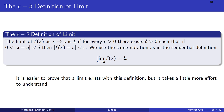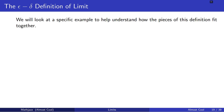The epsilon-delta definition is easier to use to prove that a limit exists or what the value of a limit is, but it takes more effort to understand because it introduces these extra variables epsilon and delta and uses them in a very particular way. What we're going to do is work through a specific example of a function at a point with a set epsilon to try and understand how all of these pieces fit together.